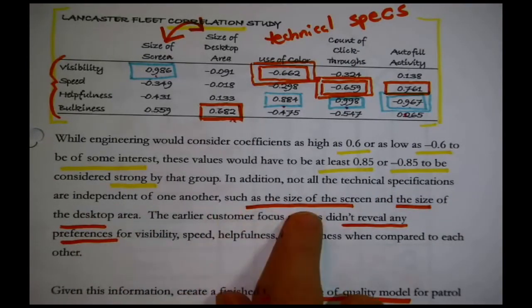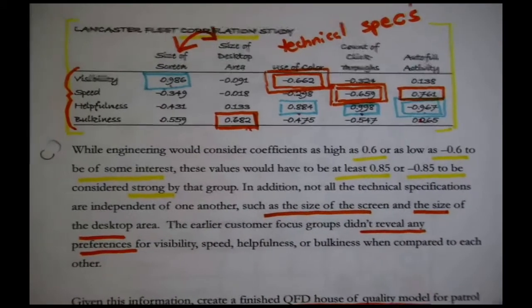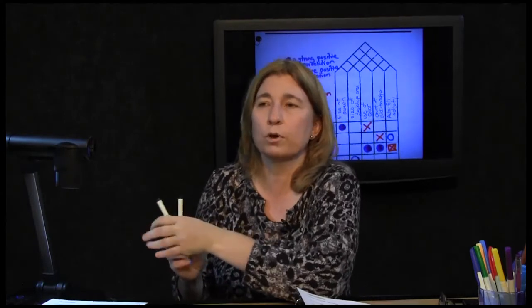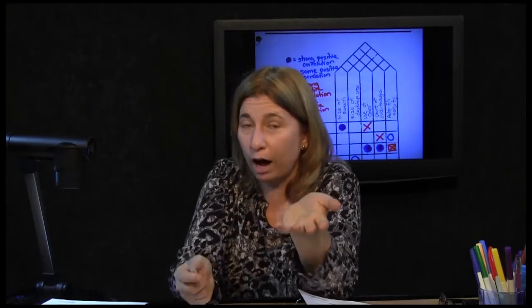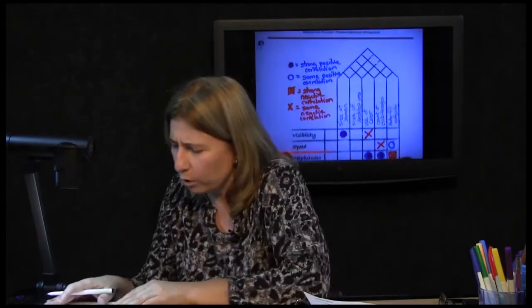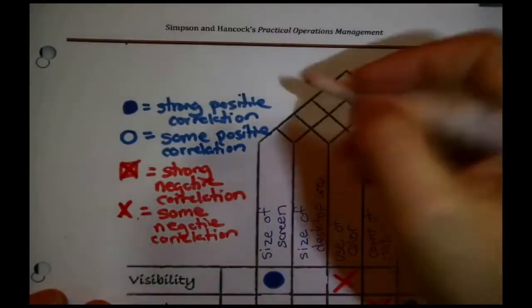And in this short scenario, they did say something about that. They said, in addition, not all technical specifications are independent. There we go. Okay, such as the size of the screen and the size of the desktop area. Those two things tend to fight. You make one larger, the other one has to be smaller because there's only so much room in the front of a car. Oh, okay, strong negative. I'm making an assumption here because they didn't actually quote us a coefficient. But they bothered to mention it, so it must be significant. What would I do with that? That belongs in the roof.